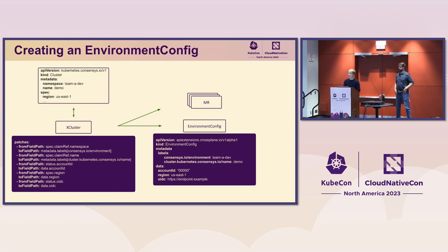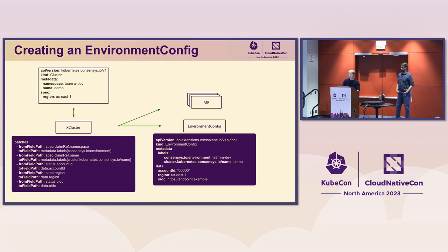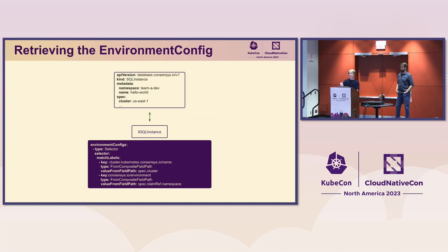The data we're interested in inside the environment config is what we'll reuse in other compositions — for example, the account ID needed to template some policies, the region (as we saw with the database case), or OIDC endpoints used by service accounts. We also add labels for the corresponding namespace and cluster so we can retrieve the environment config from another composition. In the SQL instance composition, the selector uses match labels, passing the namespace and the spec cluster name to select the appropriate environment config.